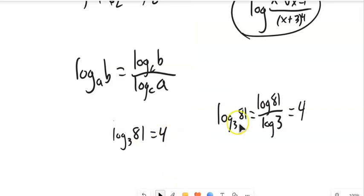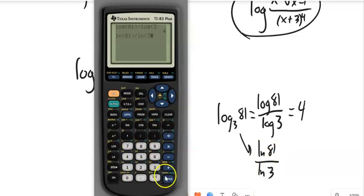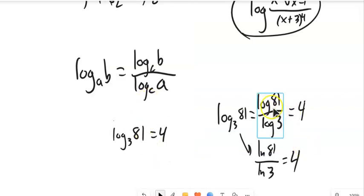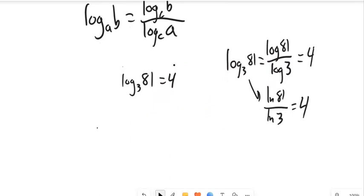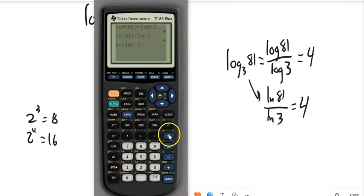Since c is arbitrary, I could also use natural log: natural log of 81 divided by natural log of 3 gives the same answer. I could even change to base 7 — as long as I use the same log in both numerator and denominator. So for log base 2 of 10, which should be between 3 and 4 since 2³=8 and 2⁴=16, I use natural log of 10 divided by natural log of 2, getting approximately 3.322.